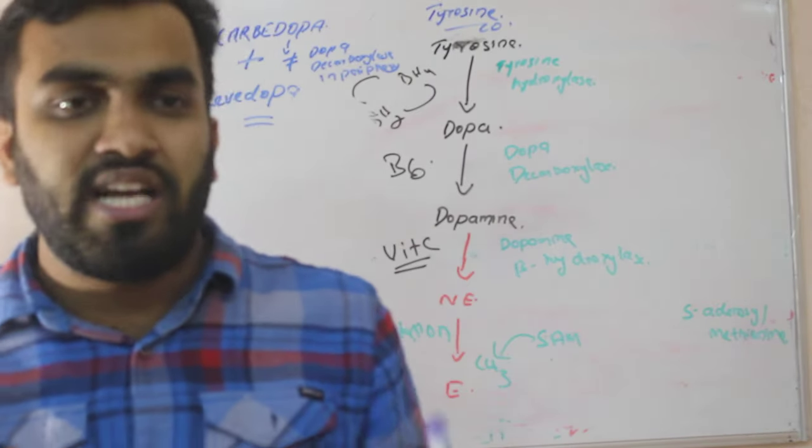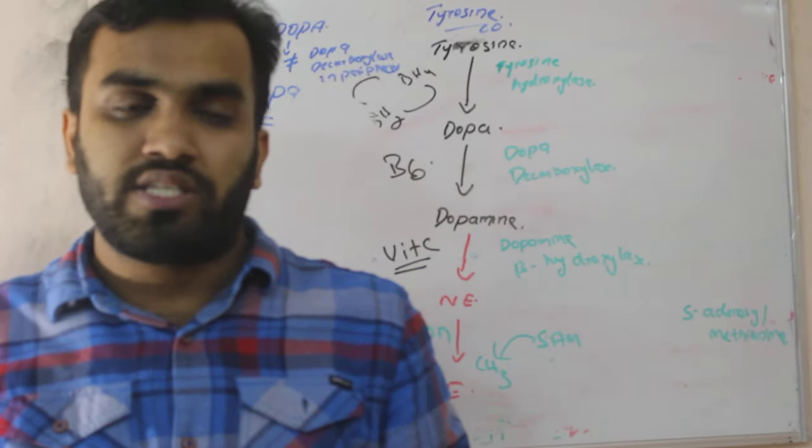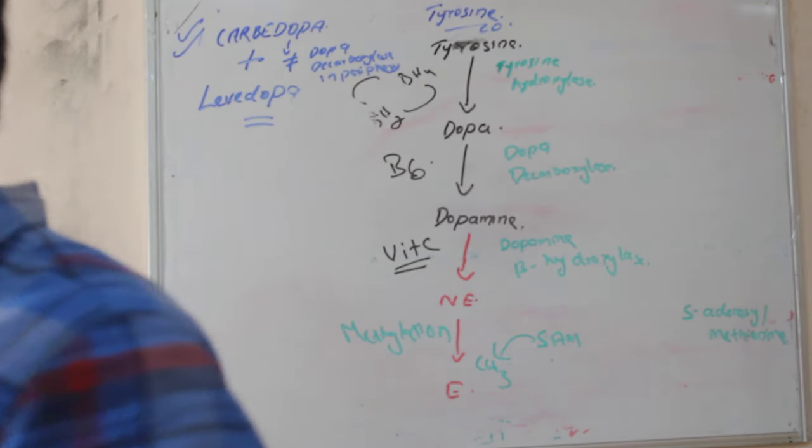So these are the two important amino acids - phenylalanine and tyrosine. This is their metabolism.